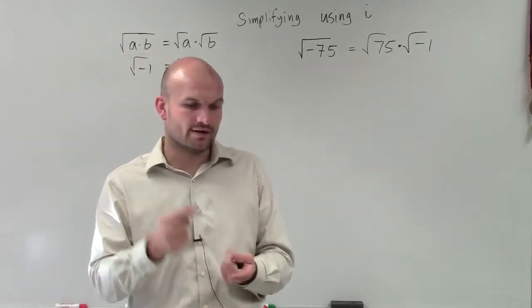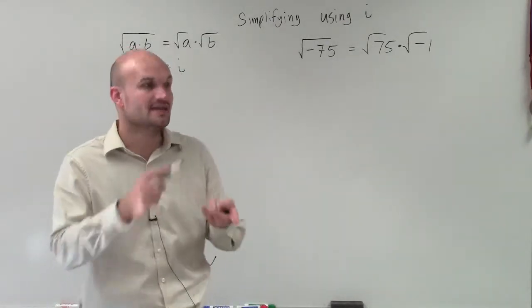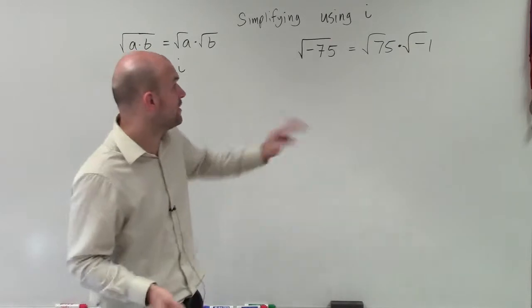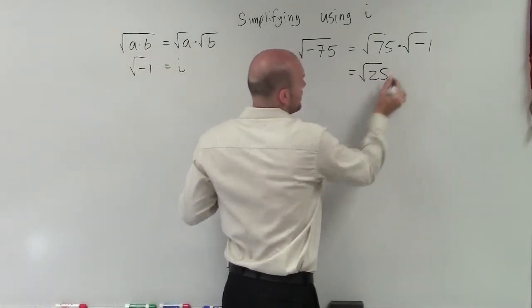So I think of my square numbers: 1, 4, 9, 16, 25, 36, 49, 64. Out of those numbers, what evenly divides into 75? Well, that's going to be 25.